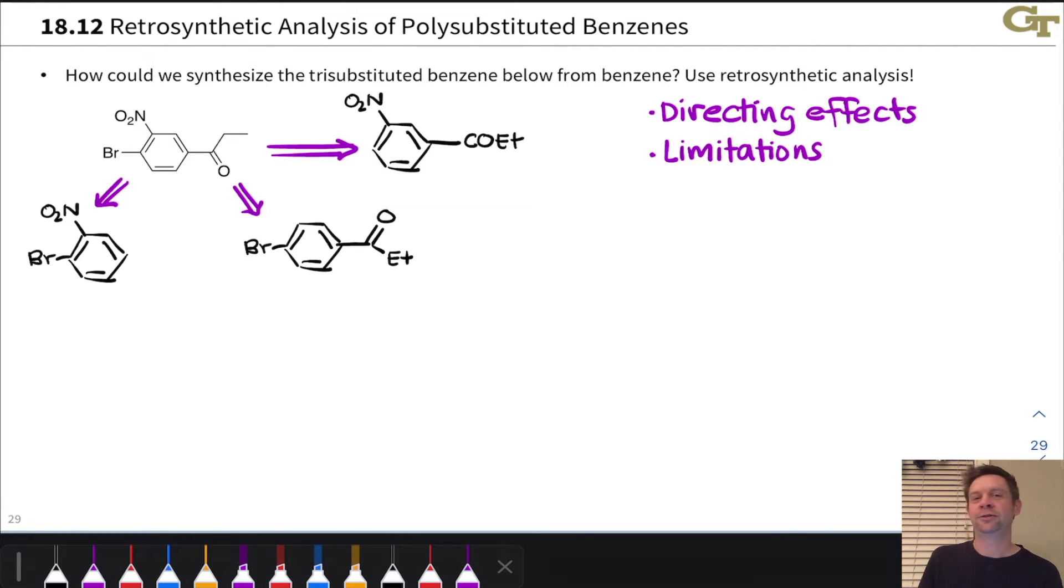Or we could imagine disconnecting the bromine substituent and thinking about electrophilic bromination as the last step of the synthesis. Only one of these three is going to work as desired. Now's a good moment to pause the video and see if you can work out which of these three paths is ideal.